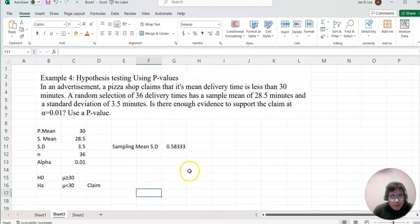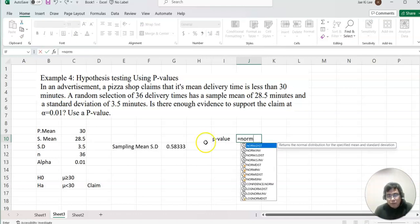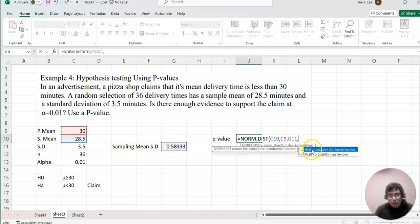Based on this information, we can find the p-value. We can find the normal distribution's p-value, but remember we are using sampling mean distribution. P-value equals normal distribution with sample mean 28.5, population mean 30, sampling mean standard deviation, and we are looking at cumulative.